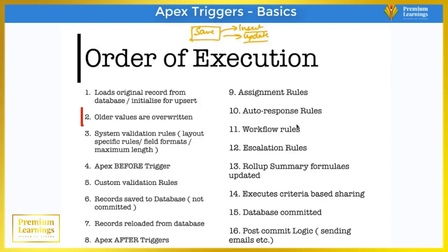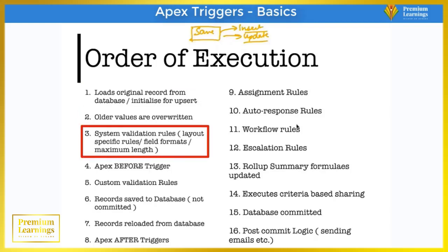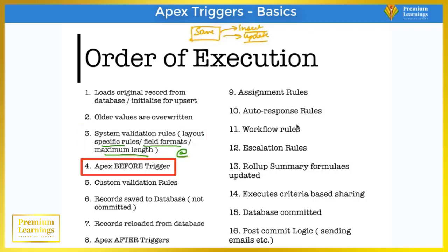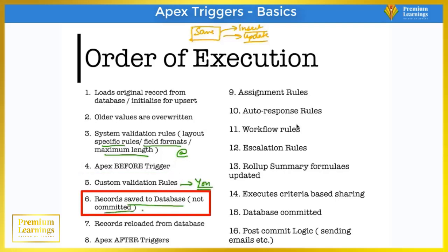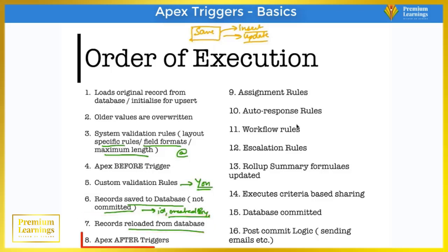If you are doing an update, it first loads the original record from the database and the older values are overwritten. After that, the system validation rules fire — meaning rules based on data type, maximum field length, and type-specific rules like email requiring an '@' symbol. Then the before trigger fires, followed by the custom validation rules you have written. Then the record is saved in the database and values like ID, created by, and other fields are generated.